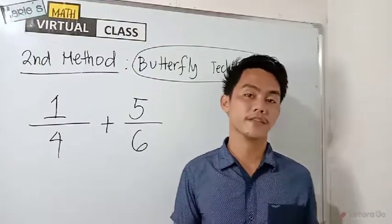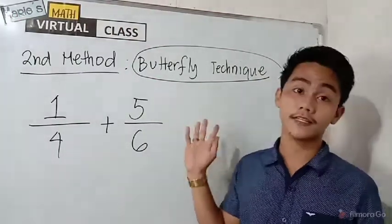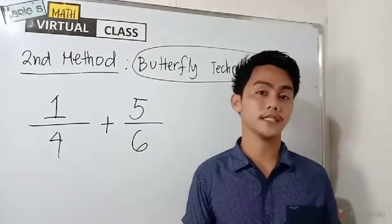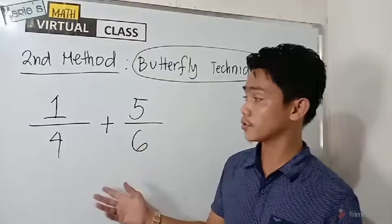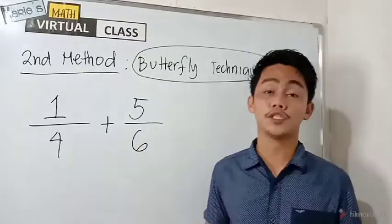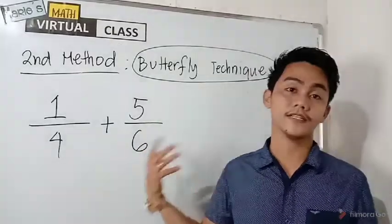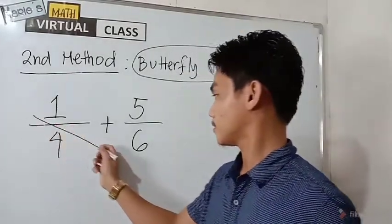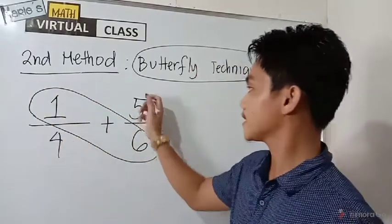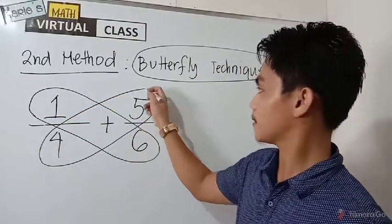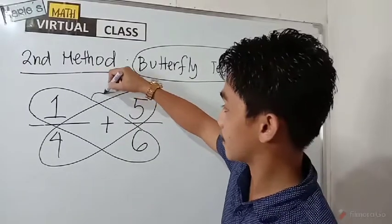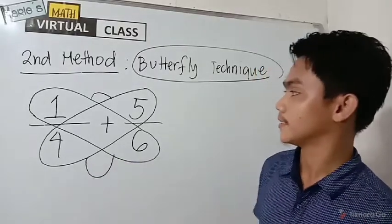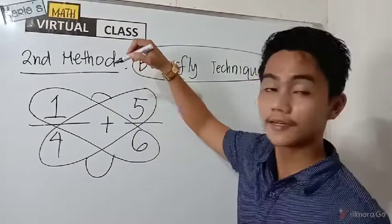Okay, for our second method, let me introduce to you the butterfly technique. This is not new, but I will just include it here for you to have a comparison with the improved LCD. We are also going to use the same expression. It should arrive with the same answer that we have in the improved LCD. To begin with, let us have first the wings of our butterfly. And then, let's put its head. Then for the final part, let's draw the tail. And then, it's missing antennas.